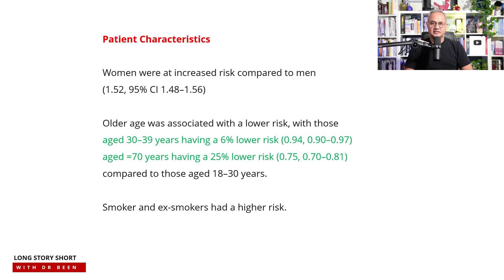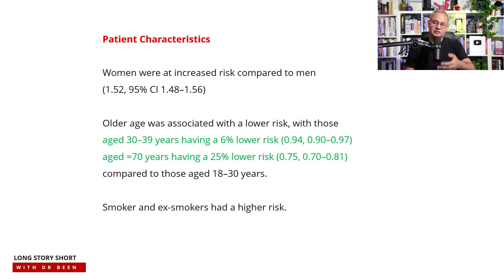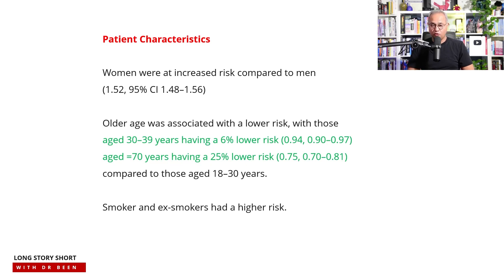One possible explanation is that as we age, our cells function less efficiently, reducing the chronic immune dysregulation that underlies long COVID. Quantitatively, those aged 30 to 39 had a six percent lower risk, and those aged 70 or older had a 25 percent lower risk of long COVID compared to the 18-to-30 reference group.